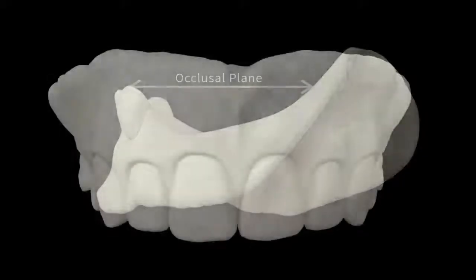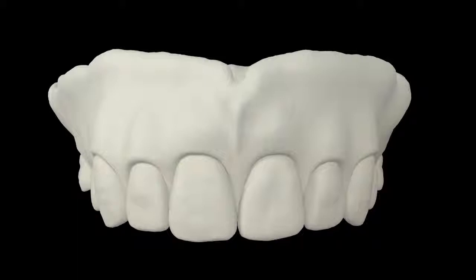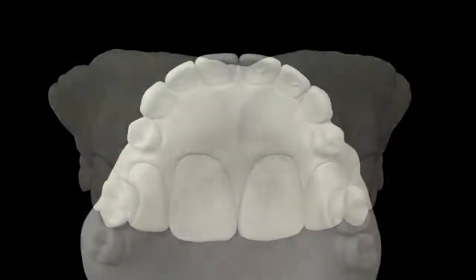For the maxillary guide, the anterior six teeth are positioned with the incisal edge 22 mm from the vestibule. The incisal edge of the anterior central incisors are positioned 8 mm from the center of the incisive papilla.